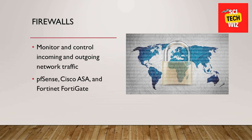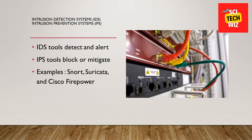Next: IDS and IPS — Intrusion Detection Systems and Intrusion Prevention Systems. IDS tools detect and alert on any suspicious or malicious activity, whereas IPS tools actively block or mitigate such activity. Examples include Snort, Suricata, and Cisco Firepower.